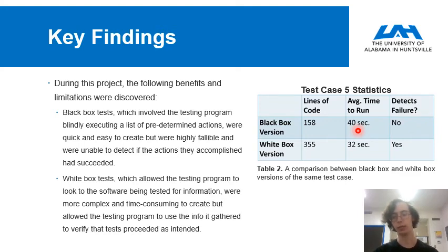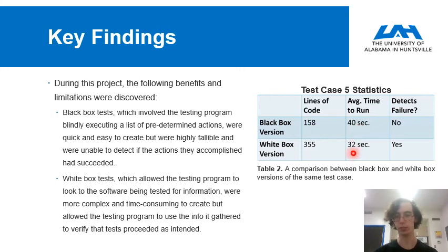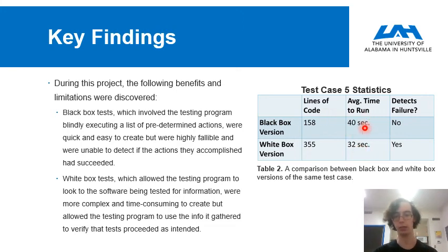Black box versions, by contrast, simply have hard-coded delays that are long enough to ensure that any sort of delay that might occur in unusual circumstances is accounted for. For example, if a program is connected to a server, a white box version can see exactly when information is successfully retrieved from the server, while the black box version might simply have a delay long enough to be mostly certain that the information will arrive on time.